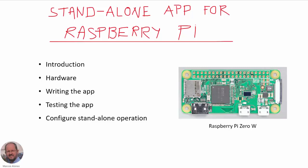Hello everyone, welcome to this video. This time we are going to see how to develop a standalone application for a Raspberry Pi. We are going to cover an introduction, the hardware we are going to use, how to write the application, then we will test the application, and finally we will see how to configure the standalone operation. For this example we are going to use a Raspberry Pi Zero W.